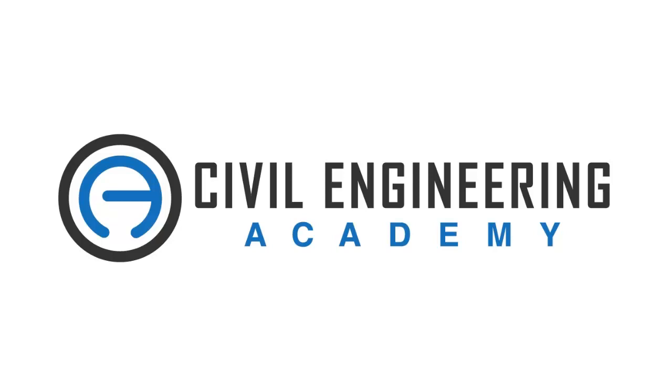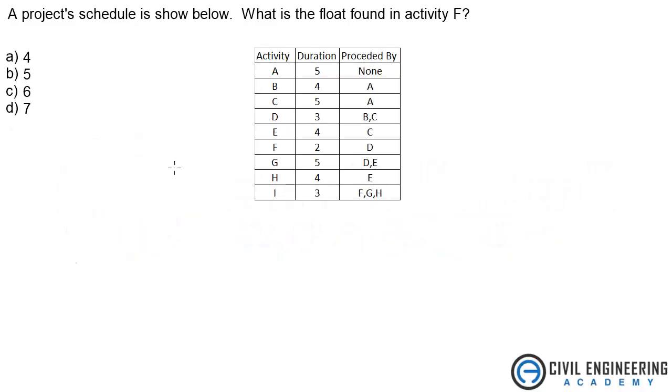Hey what's up everybody, welcome to Civil Engineering Academy. Today we're solving a problem from construction. The problem states a project schedule is shown below, what is the float found in activity F? We're given activity, duration, and activity it's preceded by and the days that we're given here.